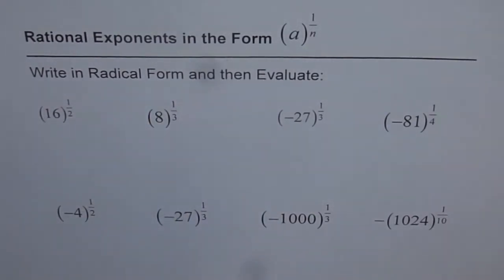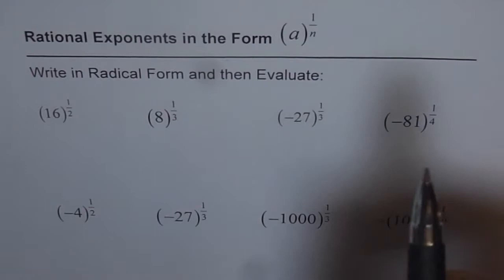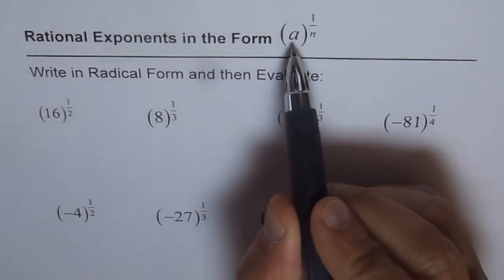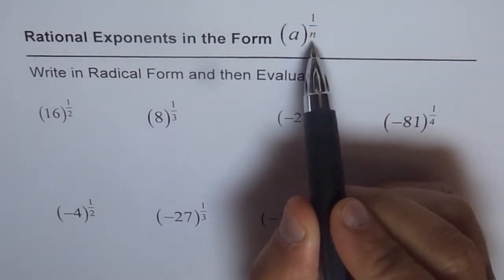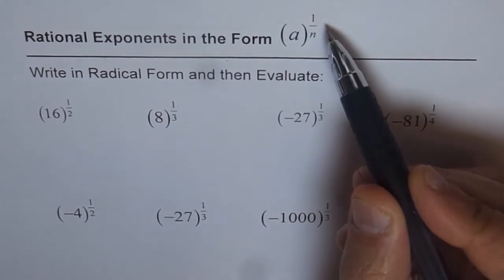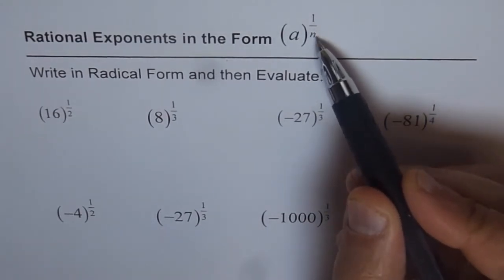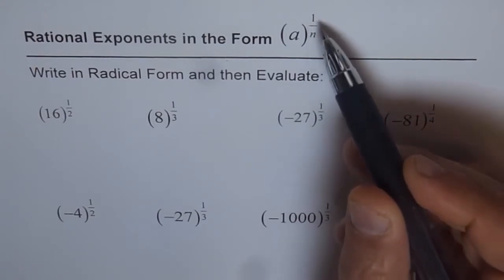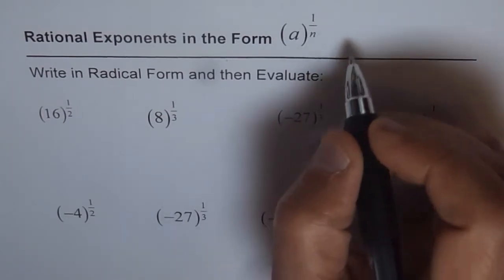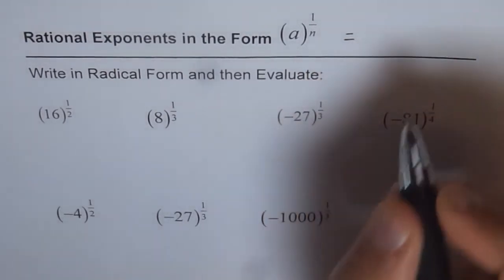Now, what is radical form? Let me give you the general radical form of an exponent form. When we write a to the power of 1 over n, it is a rational exponent since the exponent here is 1 over n. This rational exponent can also be written in radical form, which is the square root thing you always see.